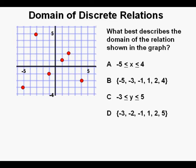Which answer did my students pick? Every one that I polled picked answer A, x is greater than or equal to negative 5 and less than or equal to 4.